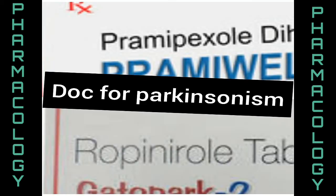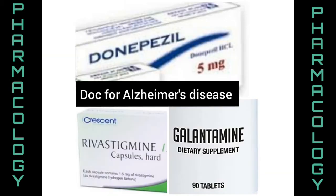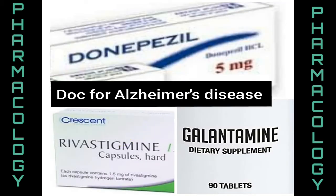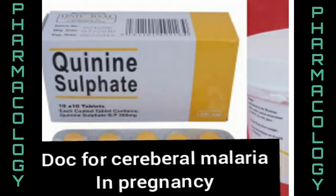Drug of choice for Parkinsonism is Pramipexole and Ropinirole. Drug of choice for Alzheimer's disease is Rivastigmine and Galantamine. Drug of choice for cerebral malaria is Artesunate.